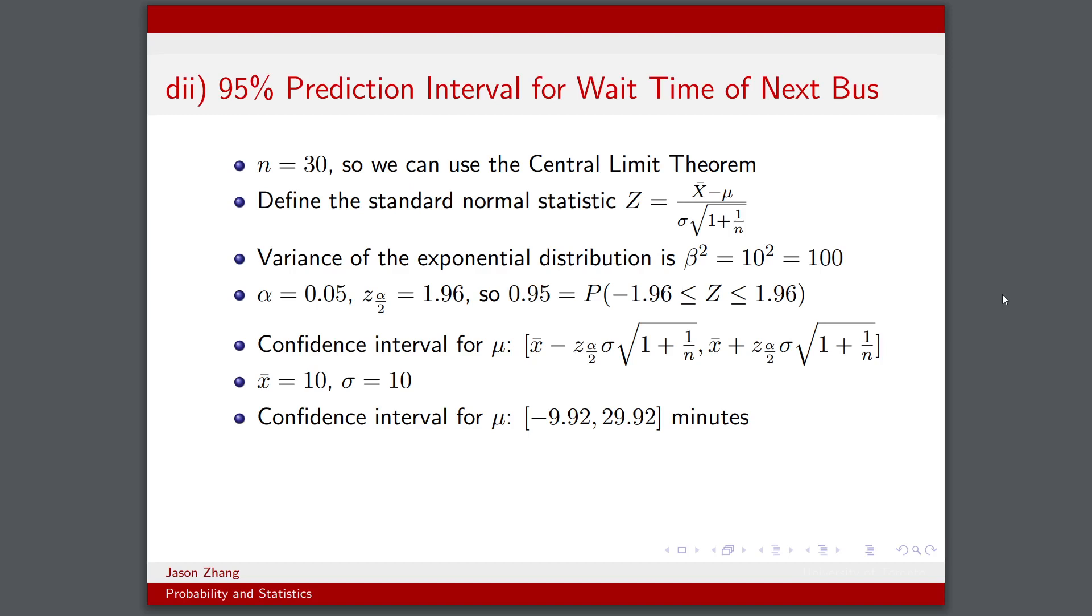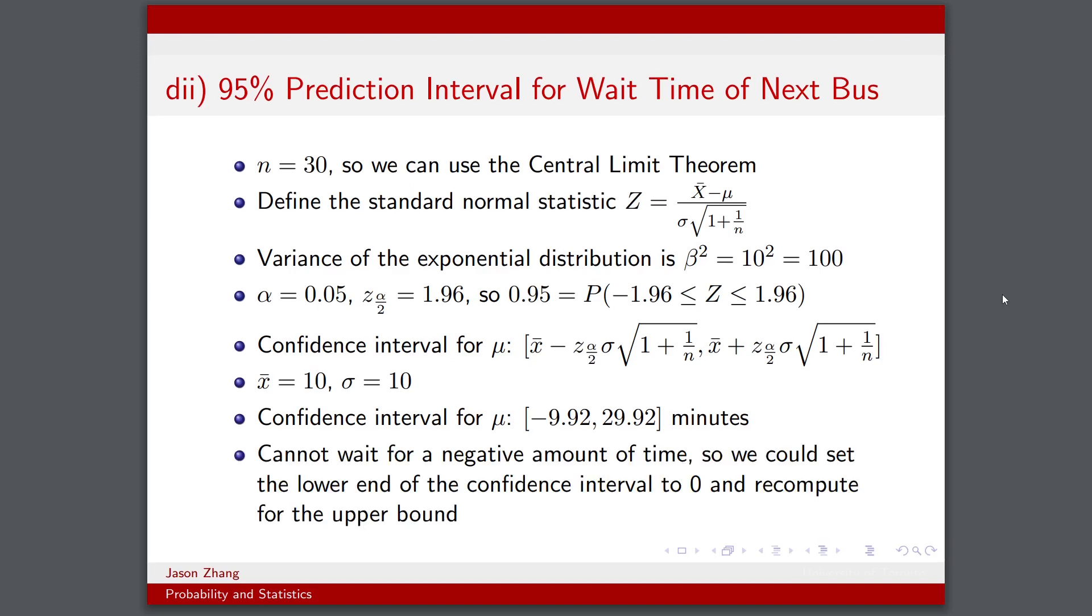So this is a 95% prediction interval for the amount of time you would have to wait for the next bus, if you have to wait for another day. And again, this doesn't really make sense because we can't wait for a bus for a negative amount of time. So if we wanted to fix this interval to make it more useful, we could set the lower end of our confidence interval to zero and then simply recompute our upper bound to make sure that we still get a reasonable prediction interval.